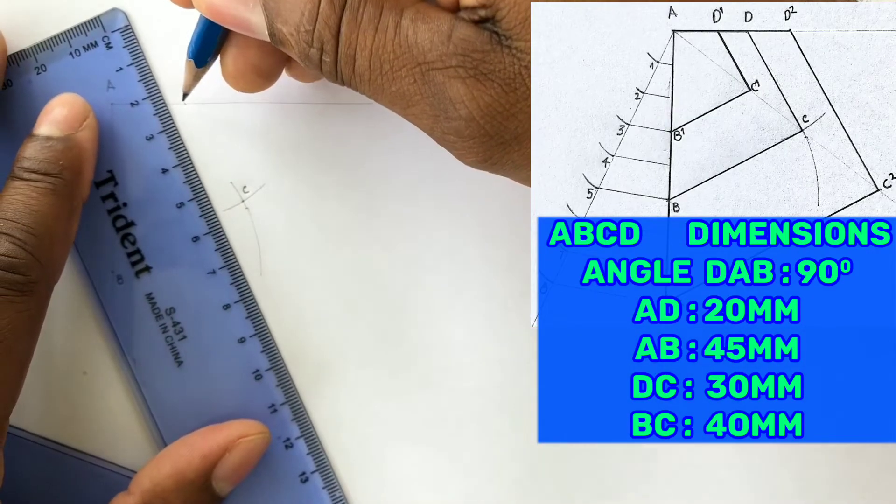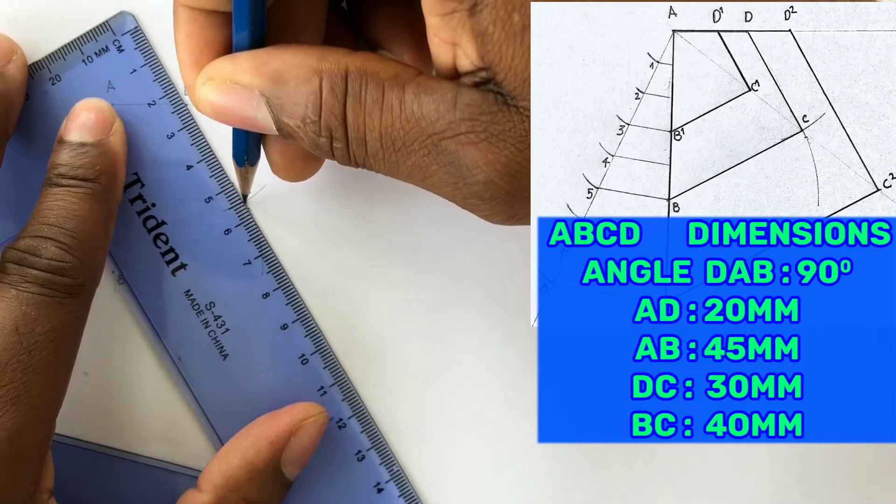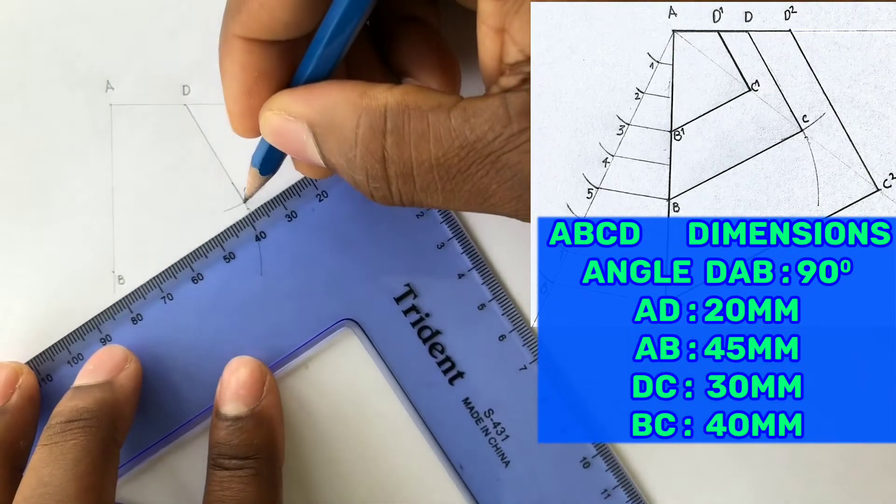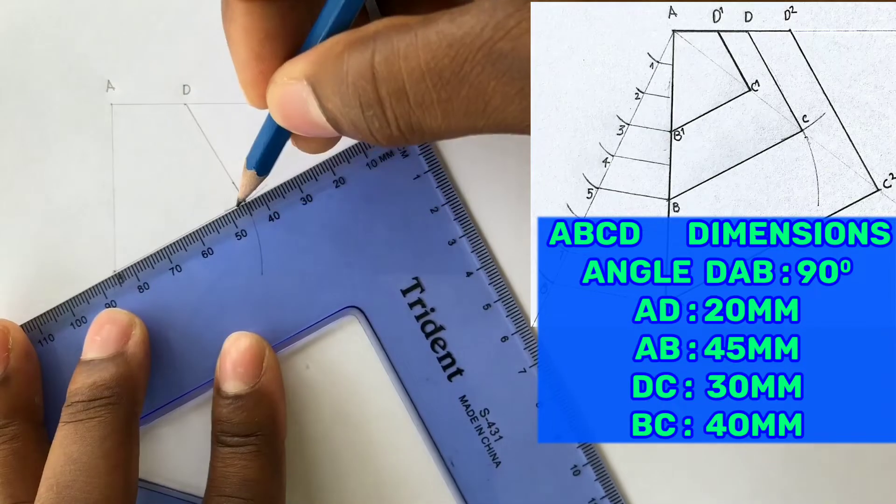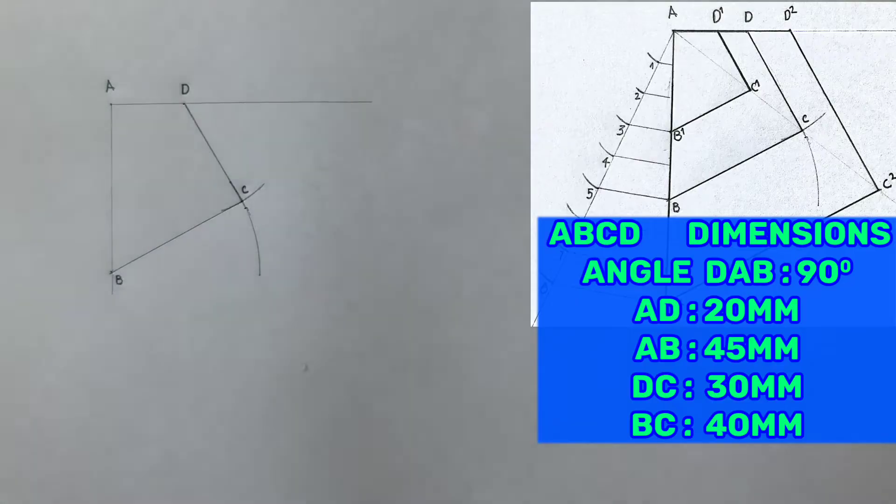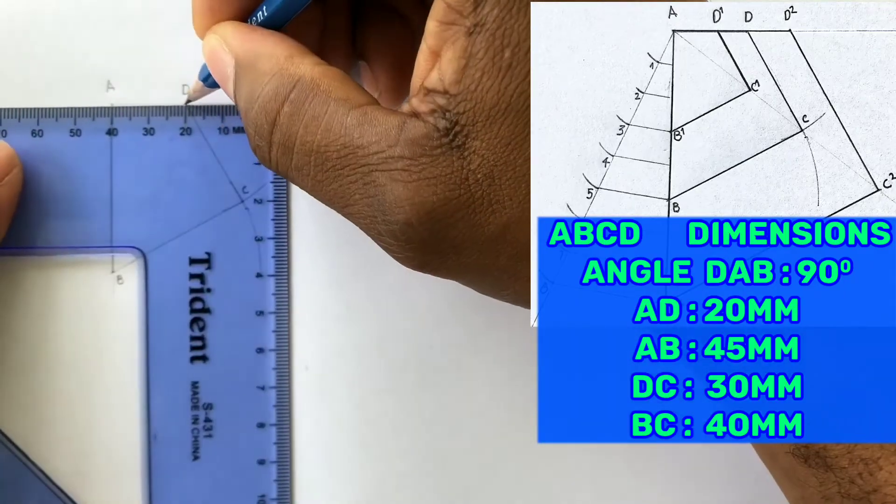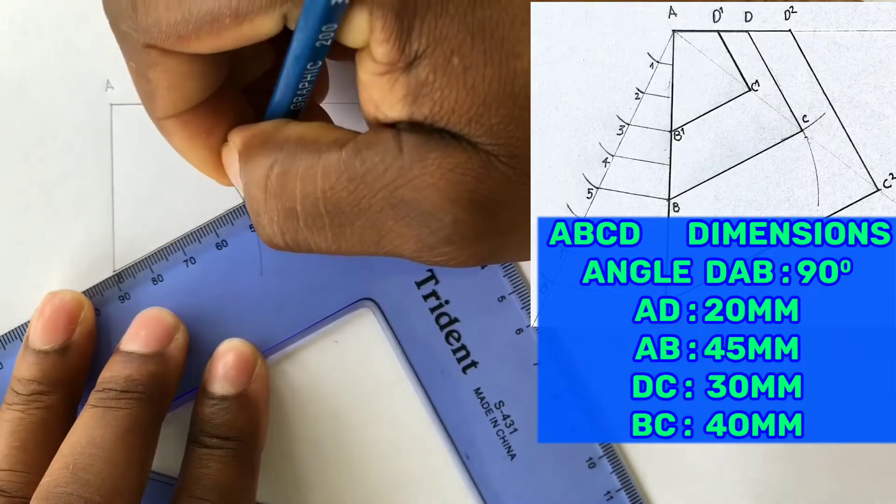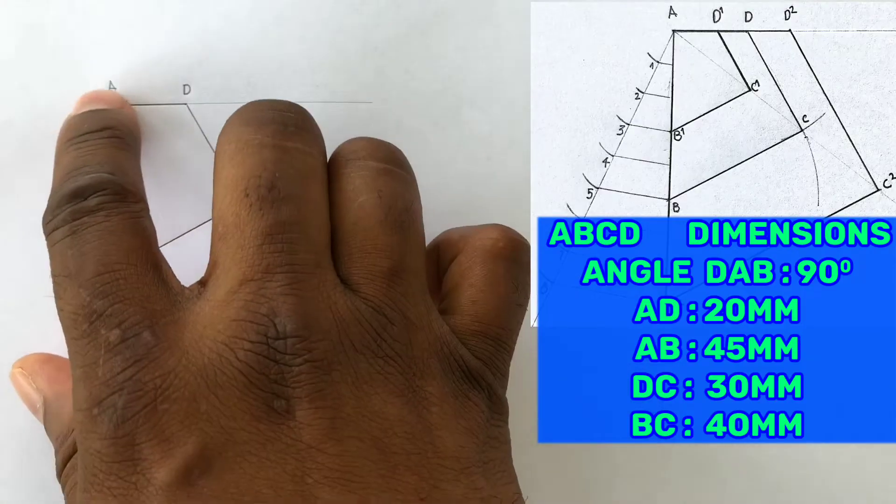Now draw a line from D to C. Now outline your required quadrilateral ABCD. This quadrilateral ABCD is your given quadrilateral.